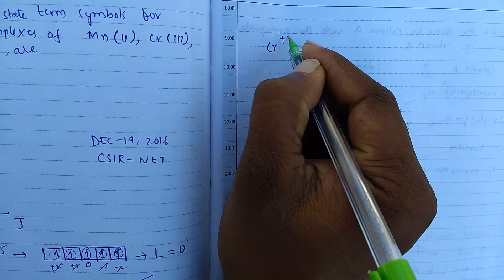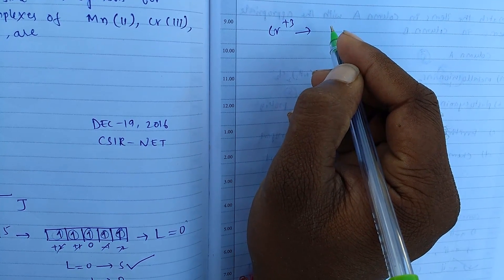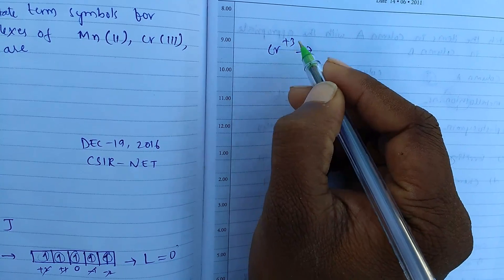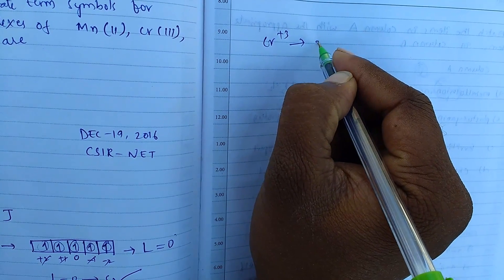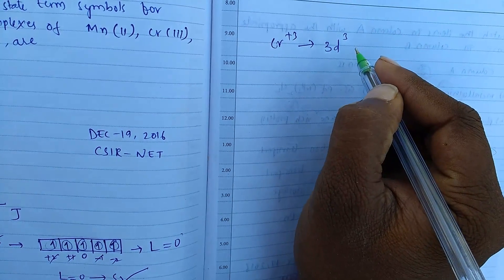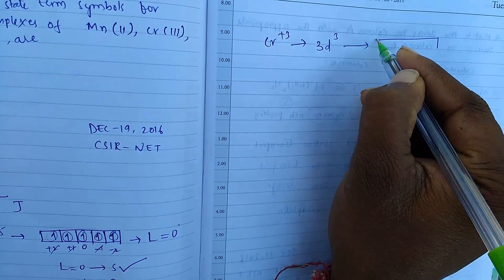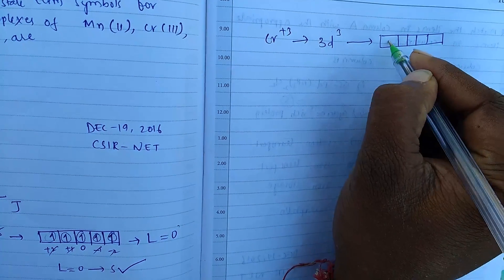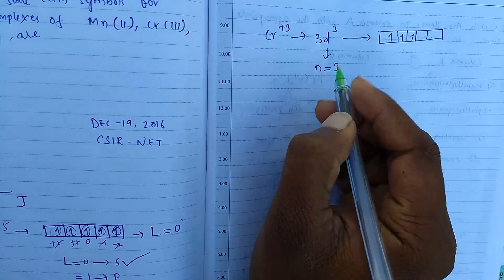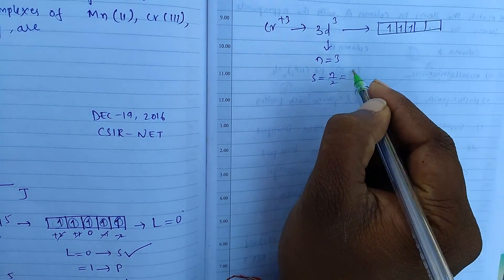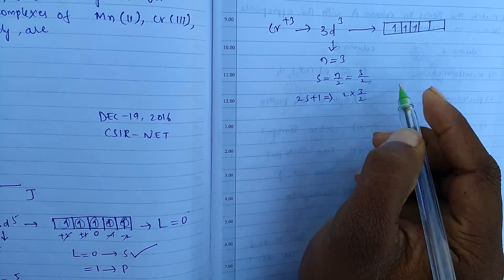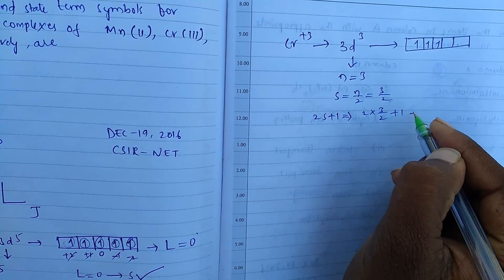Next, for Cr³⁺. Chromium has 3d⁵4s¹ electronic configuration, but it has a +3 charge, meaning it has lost 3 electrons. Hence it has 3d³ electrons. That gives 3 unpaired electrons. Number of unpaired electrons N equals 3. From this, S equals N/2, that means 3/2. Multiplicity 2S+1 equals 2 × (3/2) + 1, which equals 4.